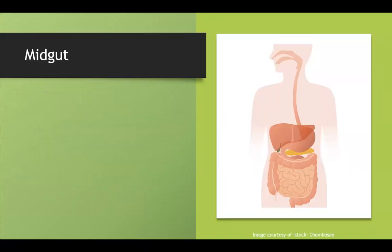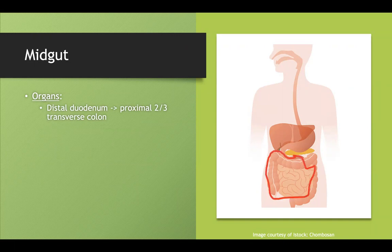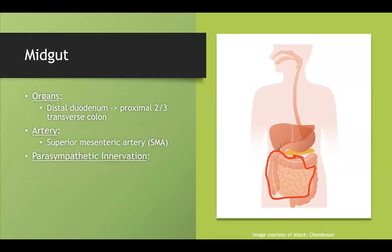Moving on to the midgut: the midgut supplies the distal duodenum — the last part of the duodenum — to the proximal two-thirds of the transverse colon, essentially the region highlighted here. Instead of the celiac artery, the superior mesenteric artery supplies this region. And again, the vagus nerve supplies the midgut, just as it did the foregut.